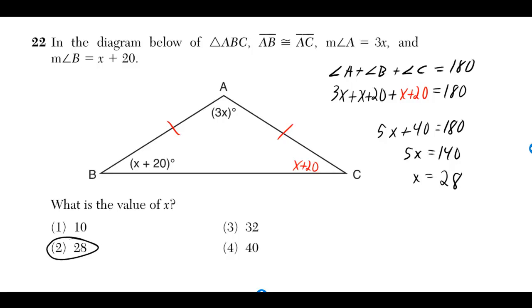In the diagram below of triangle ABC, AB is congruent to AC, the measure of angle A is equal to 3x, and the measure of angle B is equal to x plus 20.